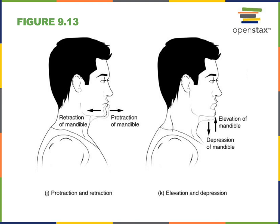Next we see the actions of protraction and retraction. Protraction means to move horizontally in the anterior direction, so pushing the chin forward is protraction of the mandible. Pulling the chin back posteriorly is retraction of the mandible.